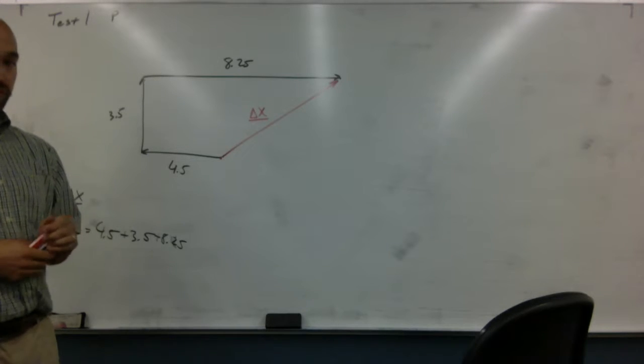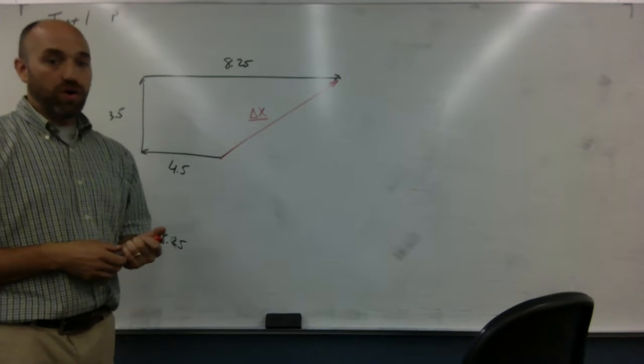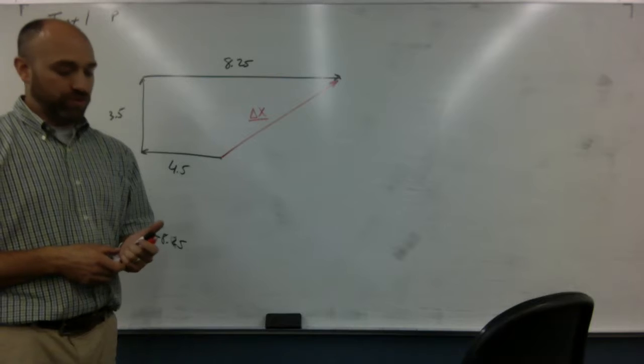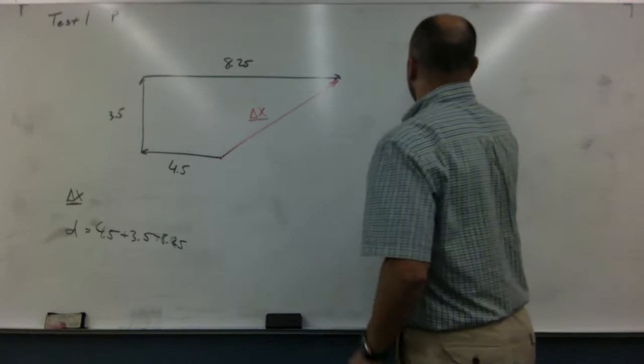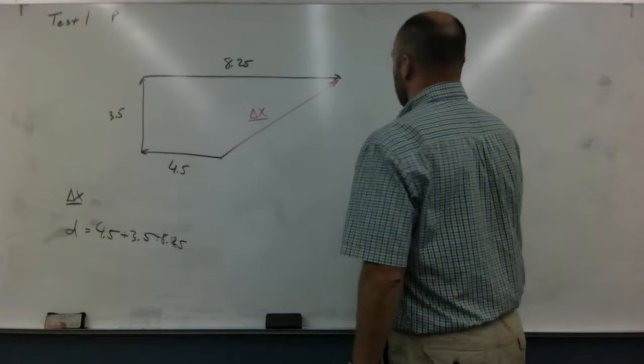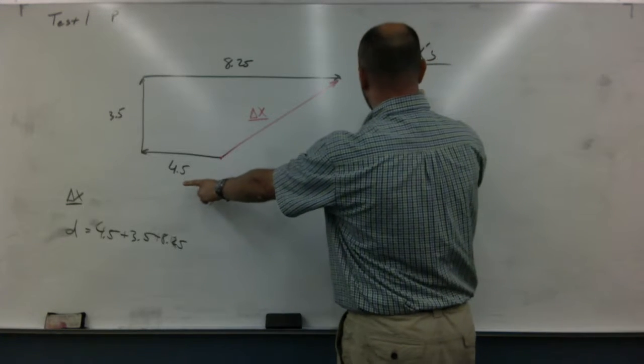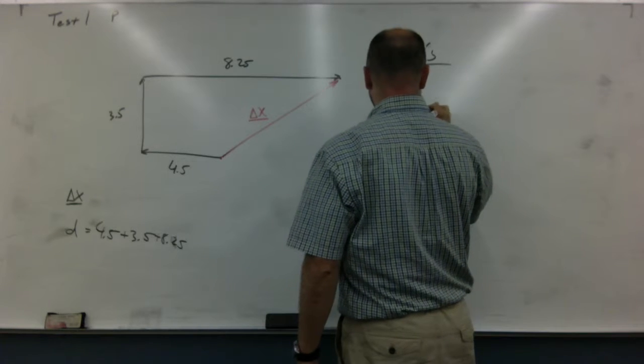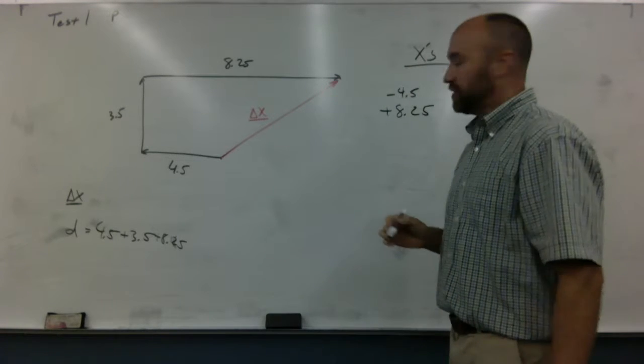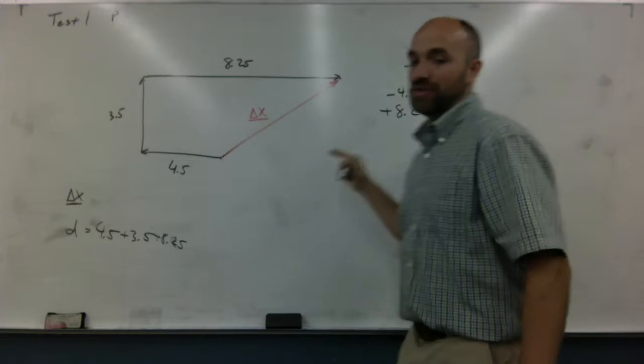To do this, we have to add up all of our x's and add up all of our y's. So let me add these up over here. We're going to add up our x's. So you're going to have negative 4.5 and positive 8.25. You see why this one's negative? Because it's going to the left. West is the left, so that's negative.